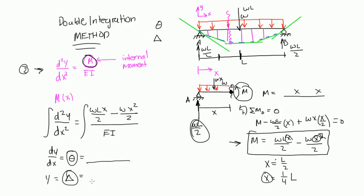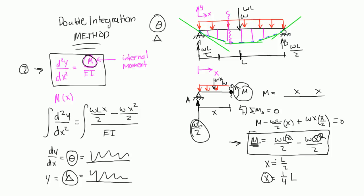If you integrate this equation two times, you end up with Y, and Y is your deflection. So if you double integrate the original equation you get deflection; if you integrate one time you get slope at any point. These two resulting equations will both be in terms of X — some equation for slope and some equation for deflection, both as functions of X.